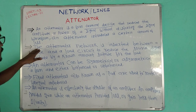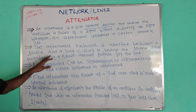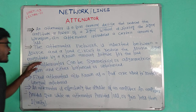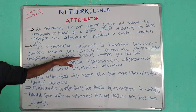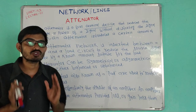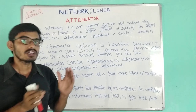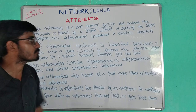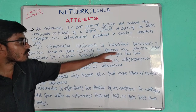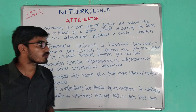The attenuator network is inserted between a source and a load circuit to reduce the source signal by a known amount suitable for the load.